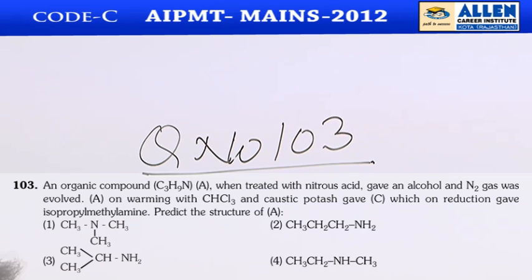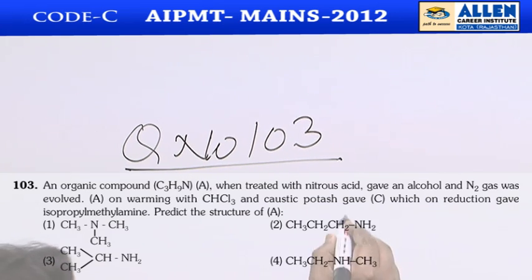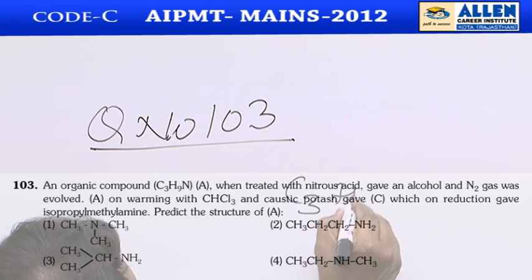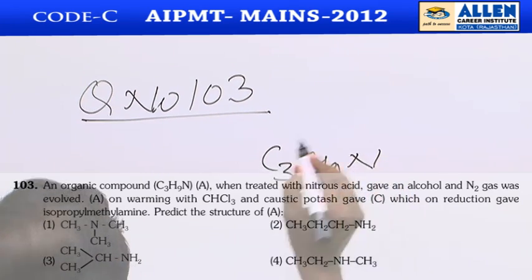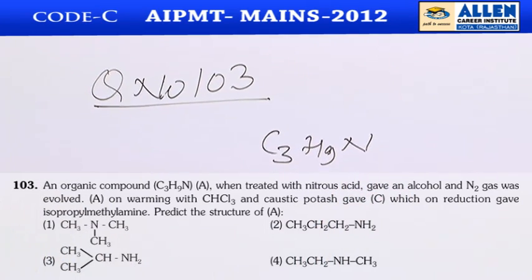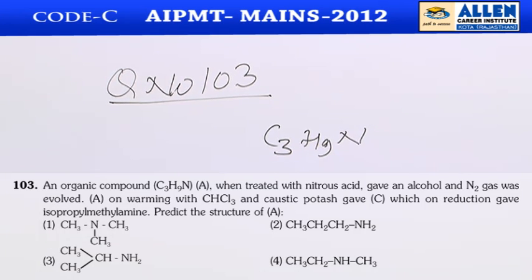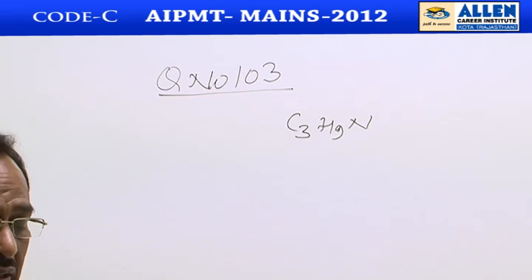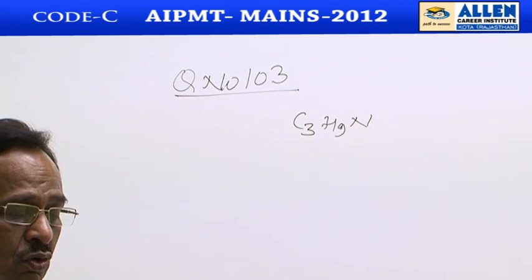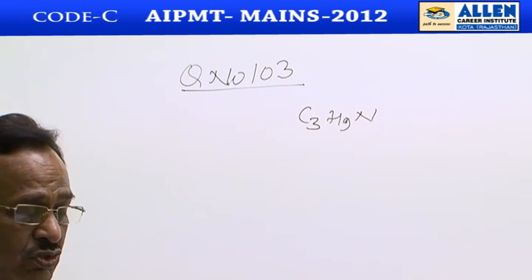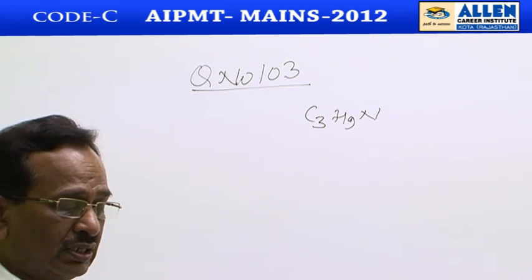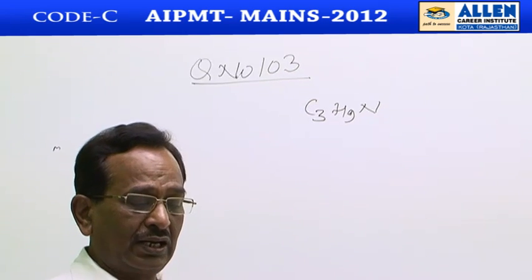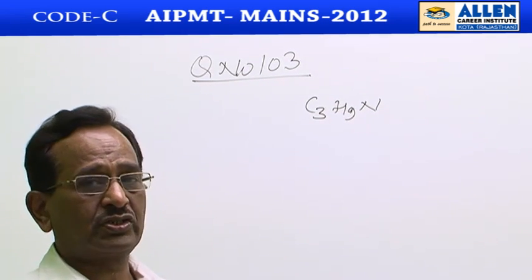Question 103 is an organic compound C3H9N. When A is treated with nitrous acid, it gives an alcohol and nitrogen gas is evolved. A on warming with chloroform and caustic potash gives C, which on reduction gives isopropylmethylamine. Predict the structure of A.